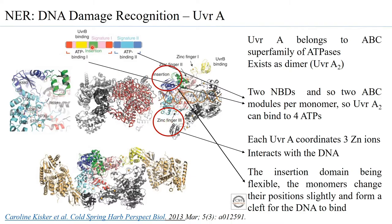UVR-A has what is called an insertion domain, which is very highly flexible. When the DNA binds to the UVR-A2, because the insertion domain is flexible, there is a rearrangement of conformation of the UVR-A2 to accommodate the DNA. Interestingly, when the two monomers come together, a cleft is formed, and it is through the insertion domain that the DNA enters this cleft. When the DNA enters this cleft, UVR-A2 can form several conformations — it can close in onto the DNA and yet has enough flexibility to open up if it encounters a DNA lesion.